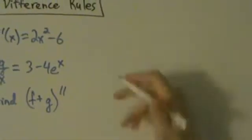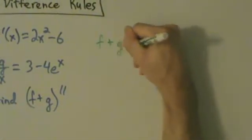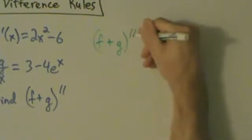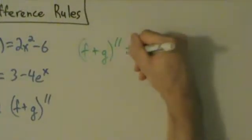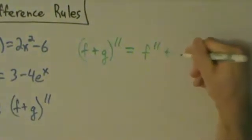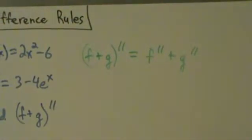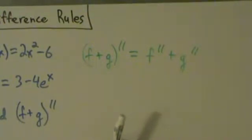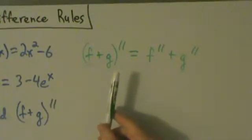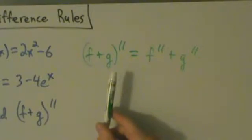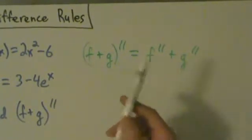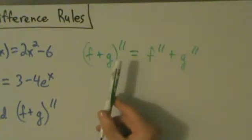So (f + g)'' is the same thing as f'' + g'', right? When we talked about the sum and difference rules, we only talked about it in terms of first derivatives, but the same is true for pretty much any derivative - second, third, fourth, any higher order derivative. You can split it up like this.